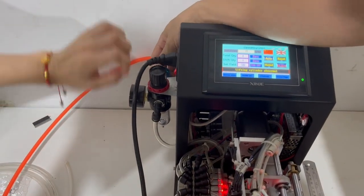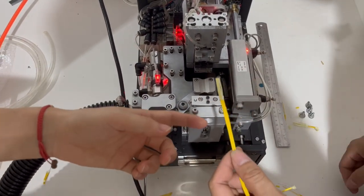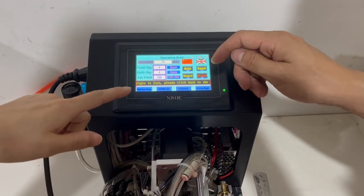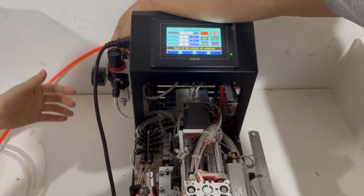First, pull this air button and then take away the cable. Click reset, manual, back zero, and then push the air.